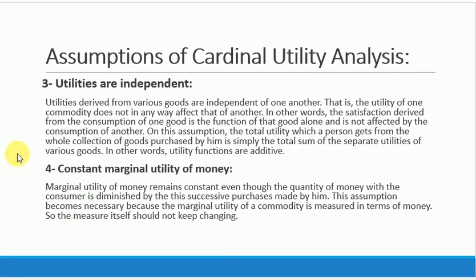The third assumption is that utilities are independent. The utility derived from one commodity is independent from the utility derived from another commodity. Different commodities have utilities that have no connection with each other — they have no effect on each other. It means the satisfaction derived from consuming one good is purely a function of that commodity alone.